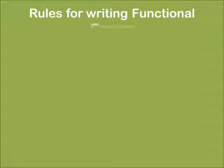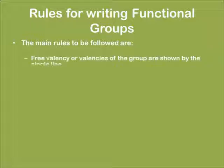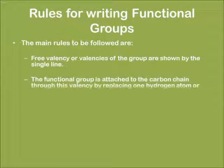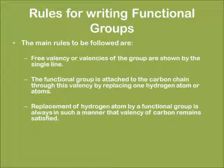Now let us learn the rules for writing down a functional group. The main rules to be followed are: the free valency of the group is shown by a single line, and the functional group is attached to the carbon chain through this valency by replacing one or more hydrogen atoms. Replacement of hydrogen by a functional group is always done in such a manner that the valency remains satisfied.